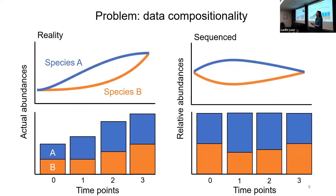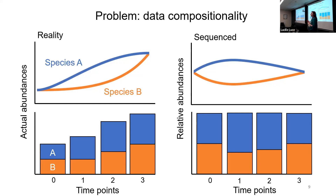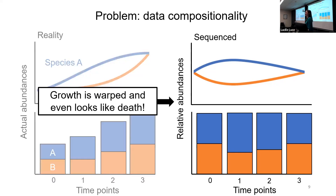Sequence data is fundamentally compositional — and I have graphs here showing how this can affect things badly. On the left-hand side we have two species both growing at different rates, shown in two different ways. When we sequence it, it becomes compositional, and that creates strange artifacts — it skews the perceived abundances of these species in the sample. You can see that growth looks warped and can even look like death in some cases. It would be really problematic to try to estimate growth and death from data like this.